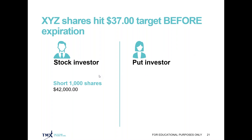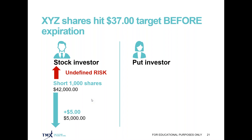Comparing the two: the stock investor is short 1,000 shares and has collected $42,000 into their account with undefined risk. The long stock investor has a defined risk of zero — shares can't drop below zero — but for the short seller, there's no telling how high those shares could go, so it truly is an undefined risk. If the shares drop to the $37 target, the short seller can buy to cover and keep the $5 difference, making $5,000.